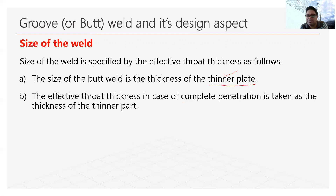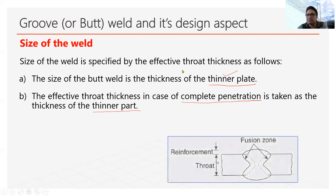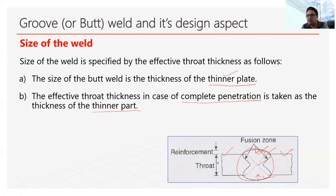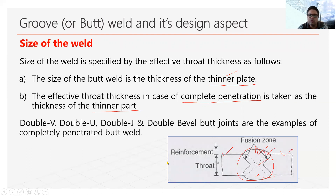In case of complete penetration, the effective throat thickness is taken as the thickness of the thinner plate. The weld is filled from both faces, so the whole zone is fully reinforced — the joint strength can be considered equivalent to the parent plate. This applies to double V, W, double J, and double bevel joints, which are all examples of fully penetrated butt weld joints.